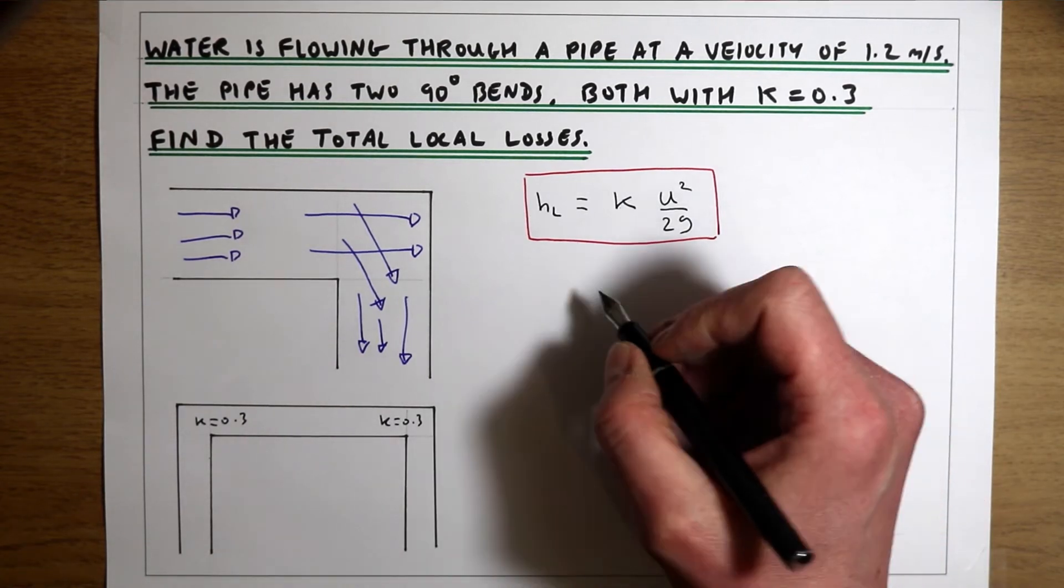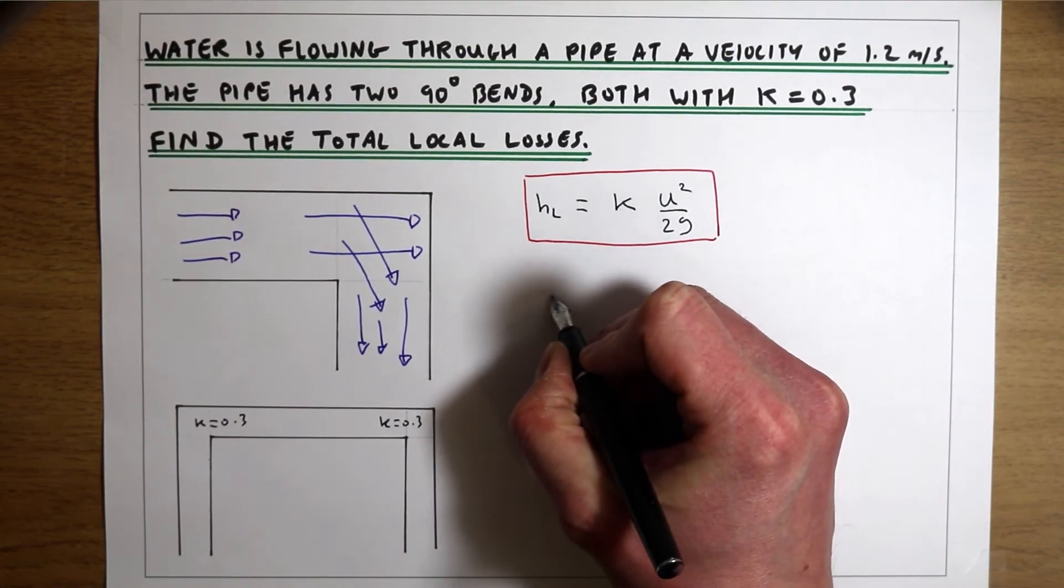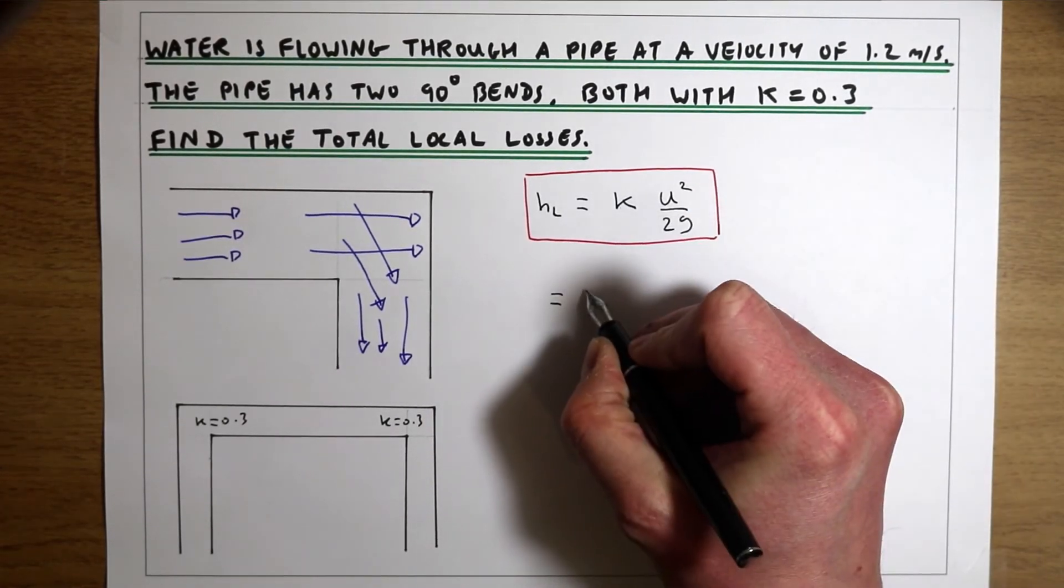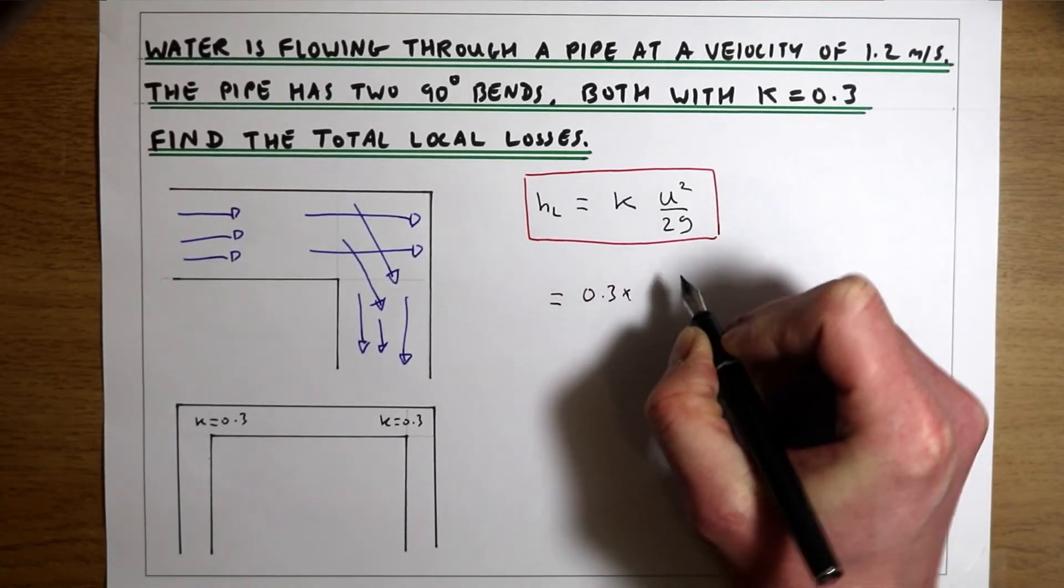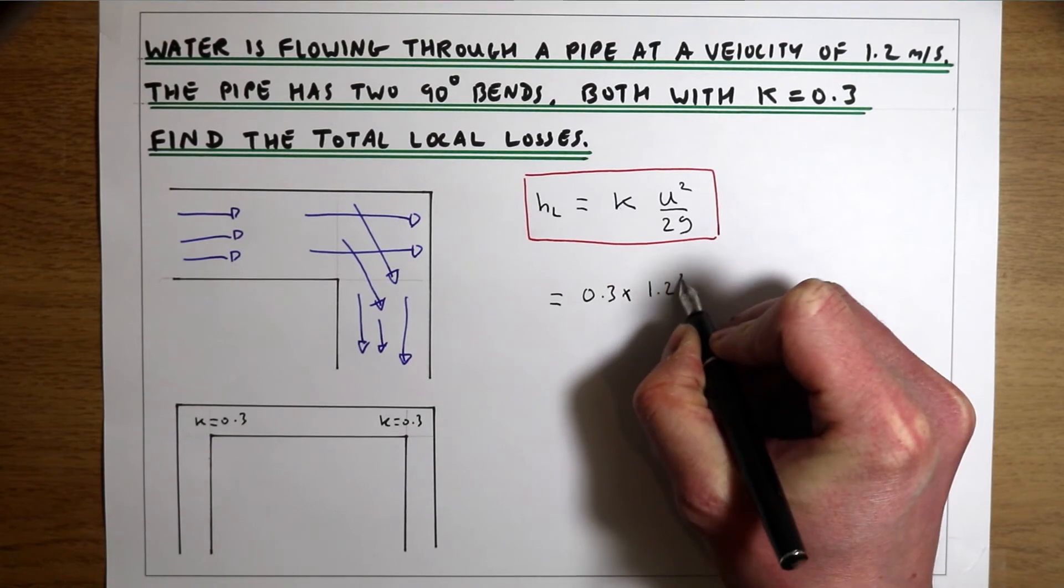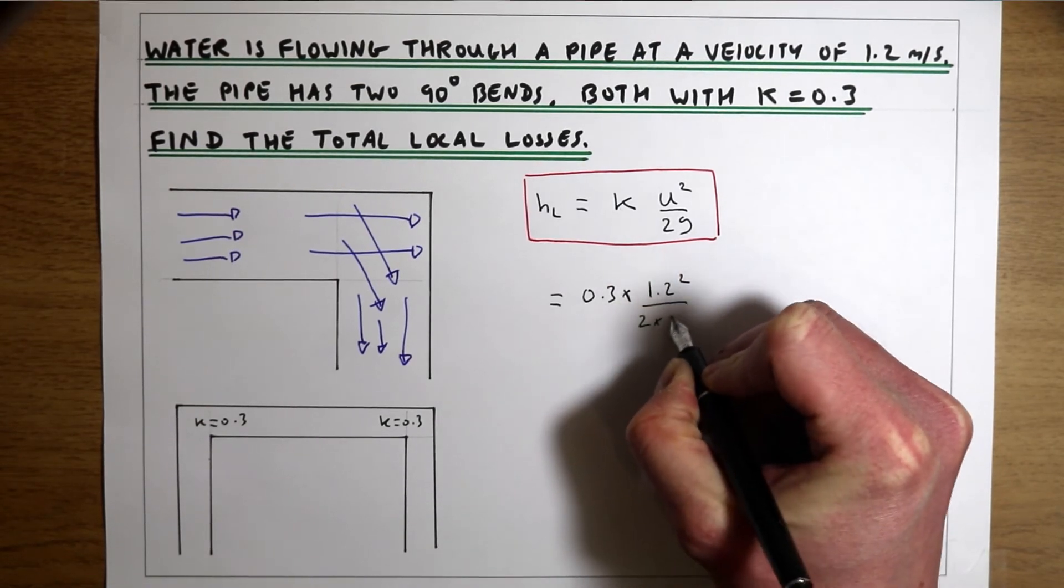So our loss is going to be our coefficient 0.3 times by our velocity squared over 2 times gravity.